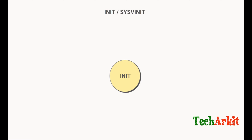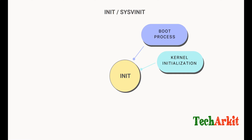Let's see how INIT controls the system boot process. When the computer boots up, the system BIOS or UEFI firmware hands control over to the bootloader, which is called GRUB. The bootloader then loads the Linux kernel into memory. That's the boot process initially handled by INIT and kernel initialization.